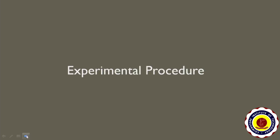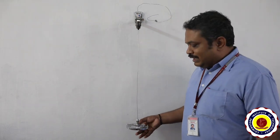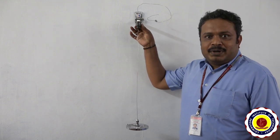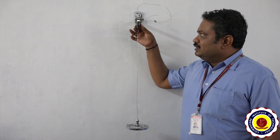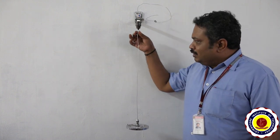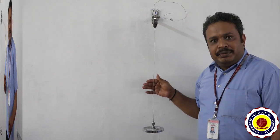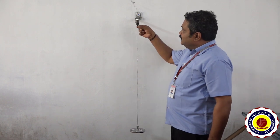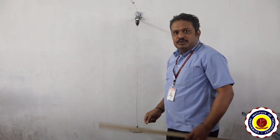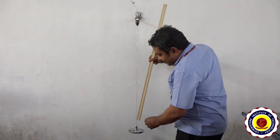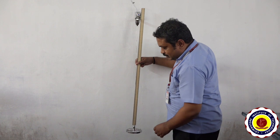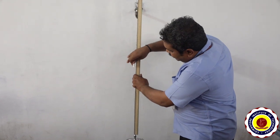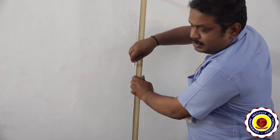Now let us see the brief experimental procedure. The torsional pendulum consists of a metal disc suspended by a uniform thin wire fixed to the upper part of the column by a chuck nut. First we are going to fix the distance L, which is the distance between the two chuck nuts, using a meter scale. You have to keep the meter scale over the first chuck nut.